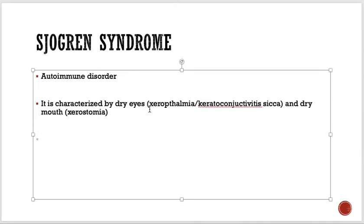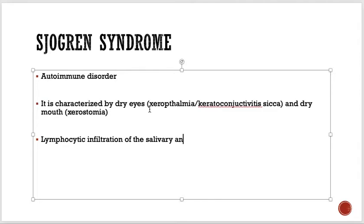Dry mouth is also called xerostomia. This occurs because of lymphocytic infiltration of the salivary and lacrimal glands. So Sjögren's syndrome is an autoimmune disorder characterized by dry eyes and dry mouth, with lymphocytic infiltration of the salivary and lacrimal glands.